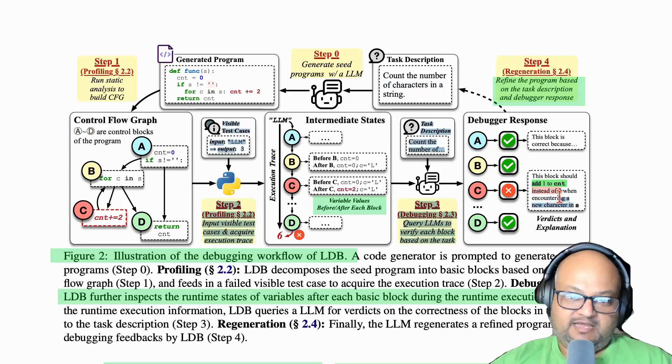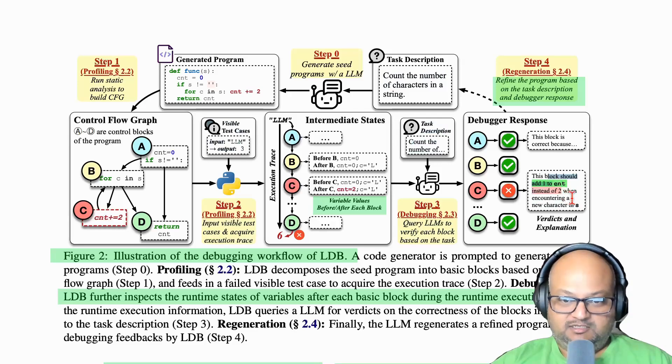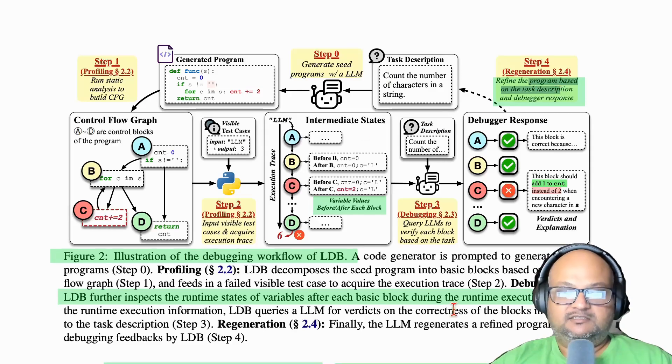Once the LLM finds the problem with some logic in a basic block that is not quite right, you then ask it to regenerate the program to fix that bug. This loop continues from there. If all your tests pass, then you're done. If not, then you go around the loop one more time.